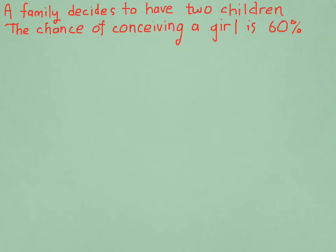So here's the question. A family decides to have two children. The chance of conceiving a girl is 60%. So let's firstly set up the tree. Now remember, we're going to have two children in the family. So we need to set up the tree to cater for that.